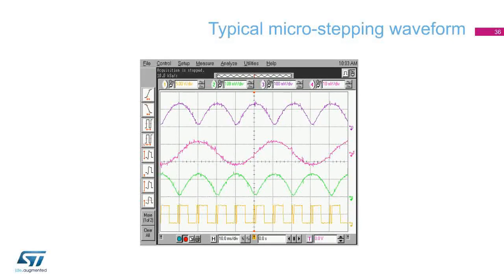As a rule of thumb, you need two additional bits in the DAC above the number of microsteps to generate an acceptable sine wave. For the 16 microsteps here, a 6-bit DAC would be sufficient. With an 8-bit DAC, you could generate an acceptable approximation for 64 microsteps. Typically, you can achieve 1/16th to 1/32nd microstepping with most motors, and how well the motor will follow the microstepping waveform depends on the construction of the motor.